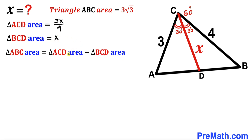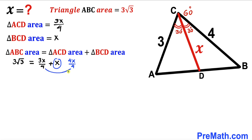Filling in the equation: 3 times square root of 3 equals 3X divided by 4 plus X. We rewrite X as 4X divided by 4 to have a common denominator.